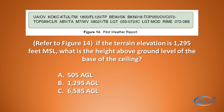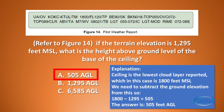The correct answer is 505 feet AGL. The ceiling is the lowest cloud layer reported, which in this case is 1800 feet MSL. So 1800 feet MSL minus 1295 feet — the ground elevation — gives you 505 feet. The lowest cloud layer reported is at 505 feet AGL.